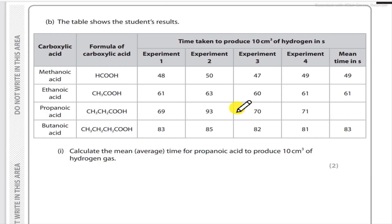Experiment data for reaction times: Experiment 1 — 61 seconds, Experiment 2 — 60 seconds, Experiment 3 — 63 seconds, Experiment 4 — 61 seconds. Average or mean: 61 seconds. The table also includes propanoic acid and butanoic acid. Calculate the mean time for propanoic acid to produce 10 centimetre cubed of hydrogen gas.